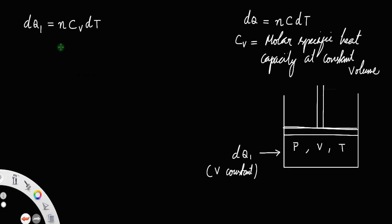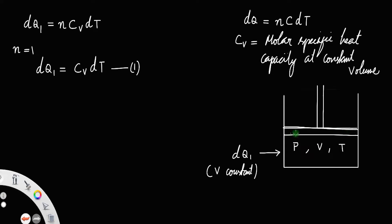For n = 1, which means number of moles is 1, dq1 = Cv·dT. Let us call that Equation 1. The piston remains stationary, which means there is no increase in volume.